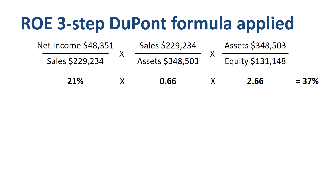Having these numbers brings us back to the same question as before, at a more detailed level: what is driving that performance? Let's go from left to right through the three components. 21% return on sales sounds high, as my reference is delivering training at companies that have a ROE in the 10% to 15% range. We can drill down another level and dive into the components of return on sales.